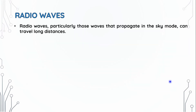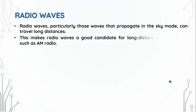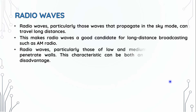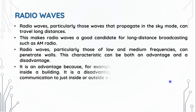Radio waves use the sky propagation method, making them a good candidate for long-distance broadcasting such as AM radio. Low and medium frequency radio waves can penetrate walls, and this property has both advantages and disadvantages.